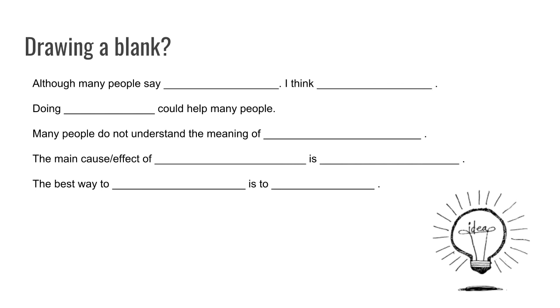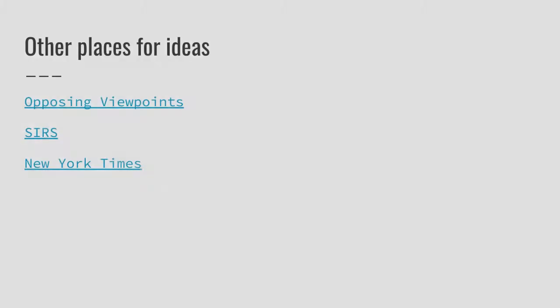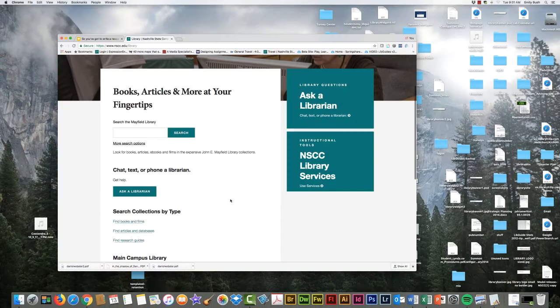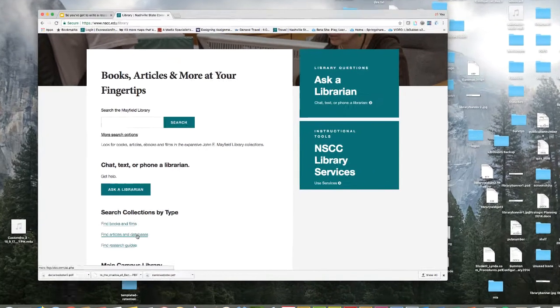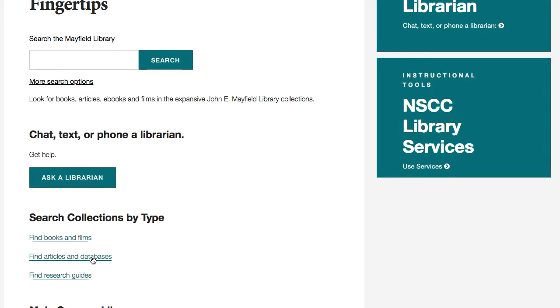Just fill in the blanks you see here on the screen. The library also has databases that can be helpful for helping you come up with topic ideas, and those include Opposing Viewpoints and SIRS. The news and current events can also be a good place to look. If you'd like to search the library databases for topic ideas, you'll need to go to the library's home page and click on Find Articles and Databases.